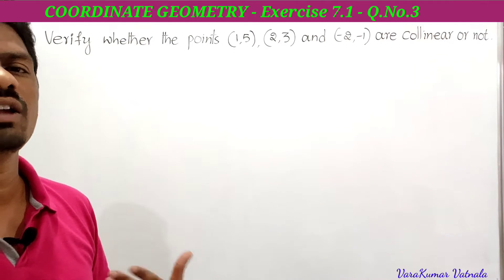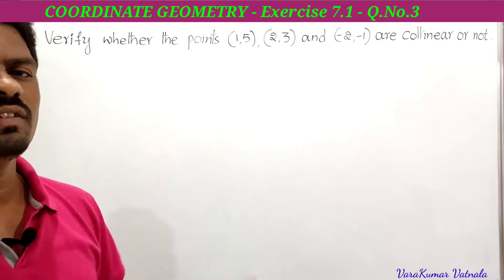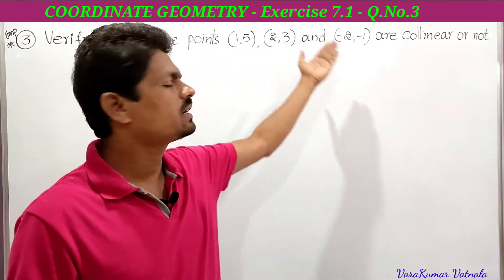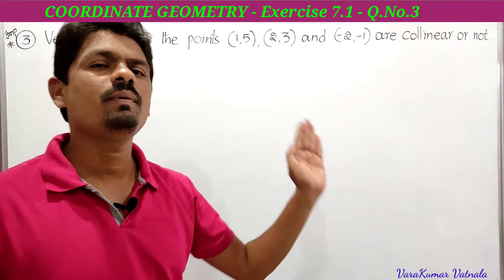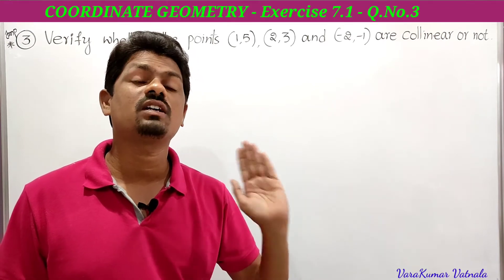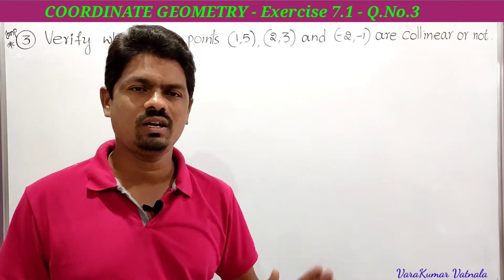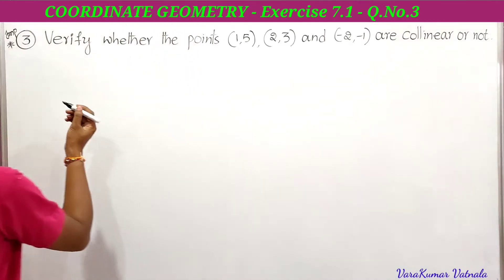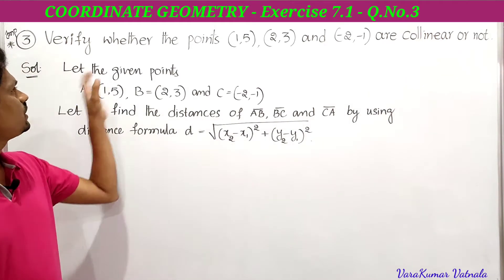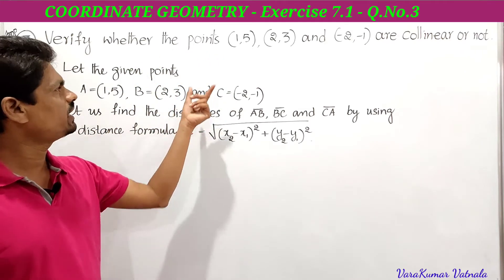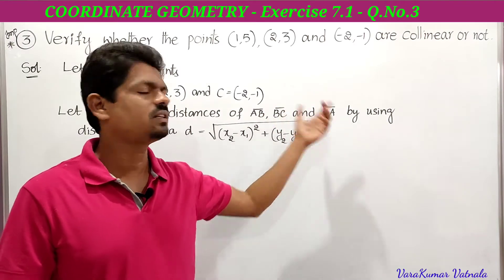The points which lie on the same line are called collinear. If the given three points are collinear, let them be A, B, and C. We have to find the distances AB, BC, and AC. If AB + BC = AC, they are collinear; if not, they are not collinear. So let A = (1, 5), B = (2, 3), and C = (−2, −1).